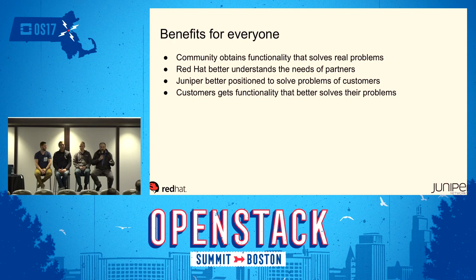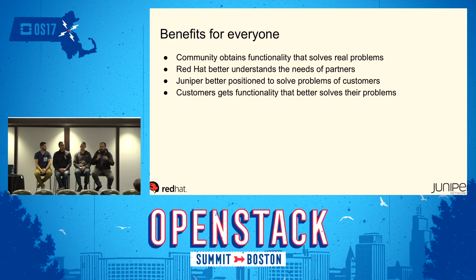To summarize the benefits: the community gets new code and functionality that's interesting and beneficial. Juniper gets additional people reviewing their code and providing recommendations and possible bug fixes. And everyone — Red Hat, Juniper, and the community — gets a solution that provides additional functionality for customers.